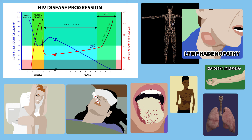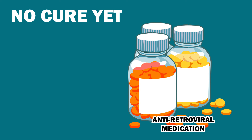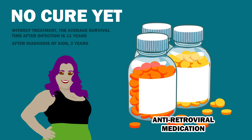In the end, people don't die from HIV — they die from infections that a healthy immune system would fight off. Although there is currently no cure for HIV, antiretroviral medications can manage levels of HIV, keeping T-cell counts high enough to prevent the infection progressing into AIDS. This treatment is not a single medication but a combination of drugs. Without treatment, the average survival time after infection is 11 years, and after diagnosis of AIDS, 3 years. With daily access to medication, HIV-positive people can expect to live almost as long as those without the virus, and are less likely to infect others.